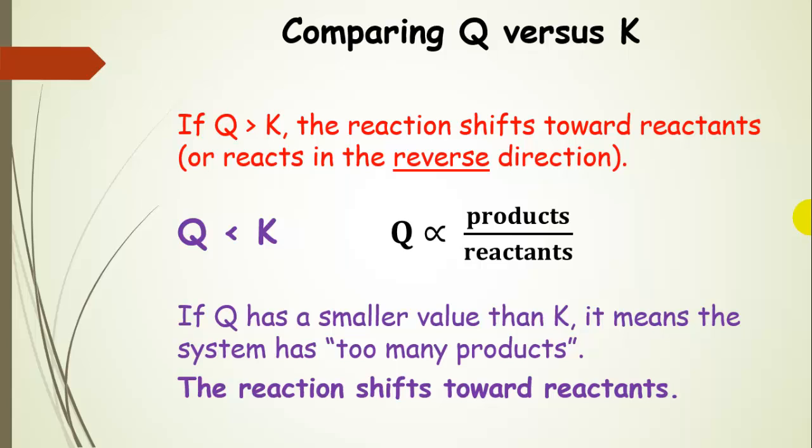Now, what happens if Q is greater than K? So that means Q is larger than K, and we can rationalize this as having too many products. So if Q is larger than K, then we have more products than we would have at equilibrium, or too few reactants. You can think about it either way.